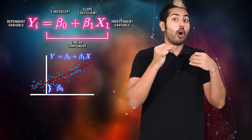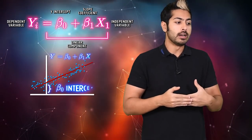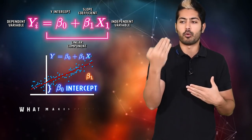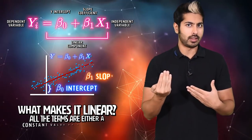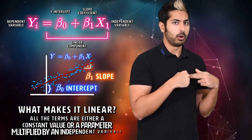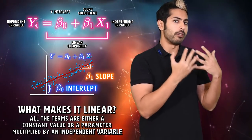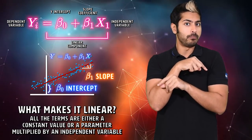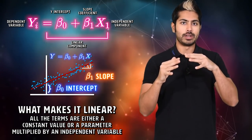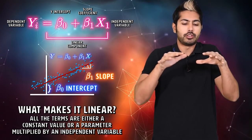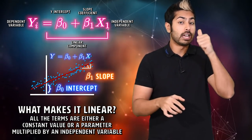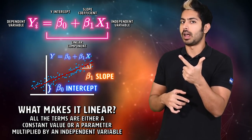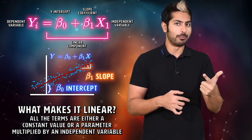In a business context, the dependent variables can also be called the predictor for sales of a product, performance, pricing, or risk. The independent variable, also called the explanatory variable, explains the influence of the dependent variable. A simple linear regression model is linear because all the terms in the model are either a constant value or a parameter multiplied by an independent variable.